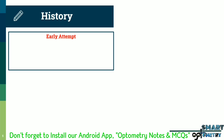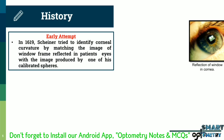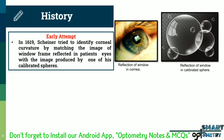Now let's see the history of corneal topography. In 1619, Scheiner tried to identify corneal curvature by matching the image of a window frame reflected in the patient's eye with the image produced by one of his calibrated spheres. He matched the size of the image of a window reflected in the patient's cornea with the size of the image reflected in a calibrated sphere. For example, if the image matched a sphere with a radius of curvature of 7.5 mm, then the patient's corneal radius of curvature was considered to be 7.5 mm.